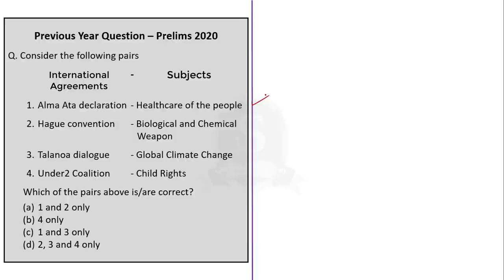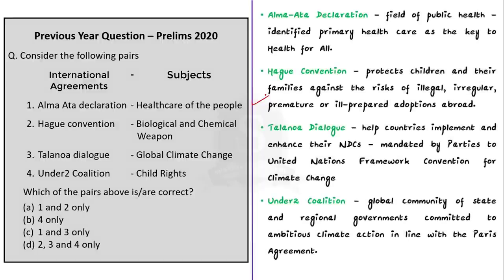The Alma-Ata Declaration was adopted in 1978 and emerged as a milestone of the 20th century in the field of public health, because it identified primary health care as the key to the attainment of the goal of health for all. It expressed the need for urgent action by all governments and the world community to protect and promote health. It was the first international declaration underlining the importance of primary health care. So this is a correctly matched pair.